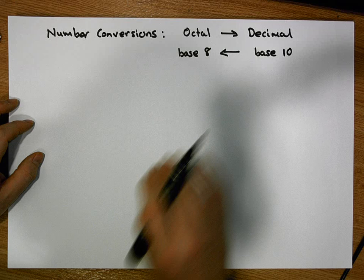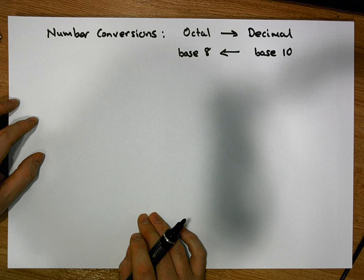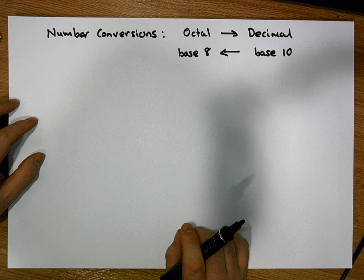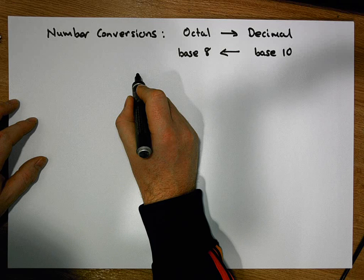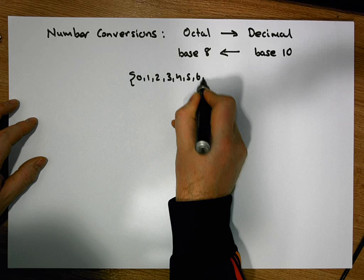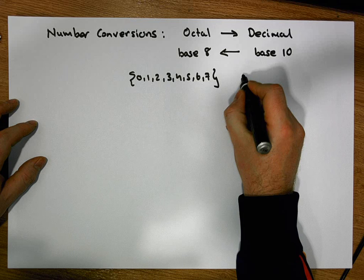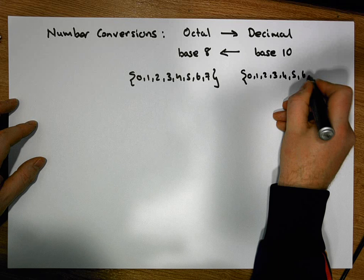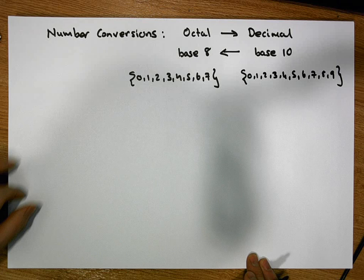All of our numbers, no matter what the base, come from a positional number system, where each digit within the number has a particular position. In octal, there are only eight digits that numbers can be composed of: 0, 1, 2, 3, 4, 5, 6, and 7. In decimal, there are ten digits: 0 through 9.